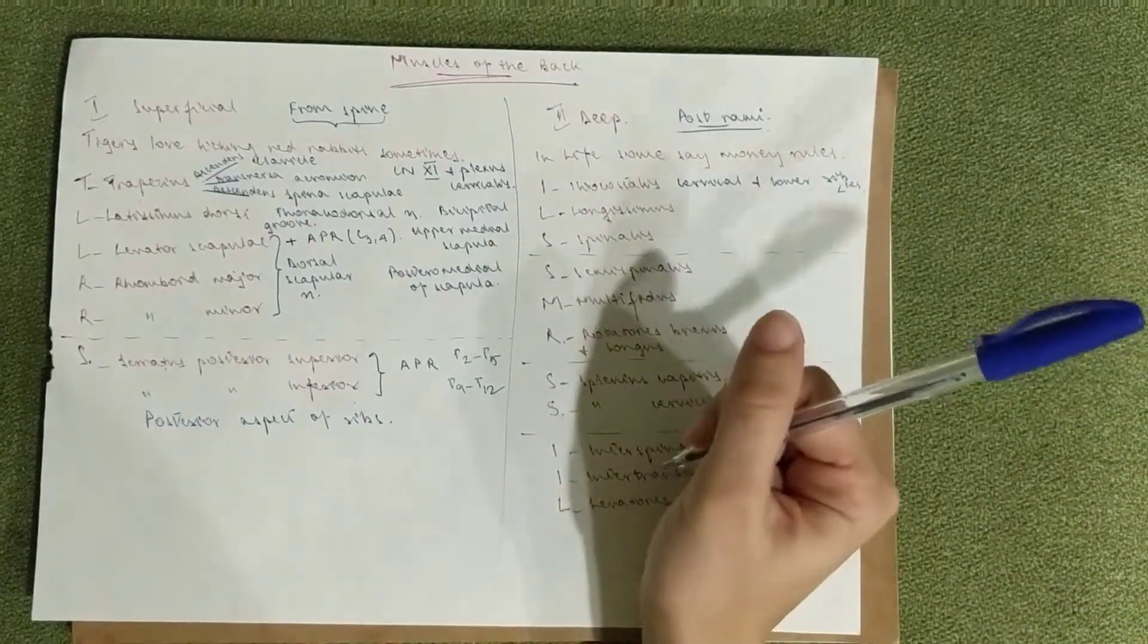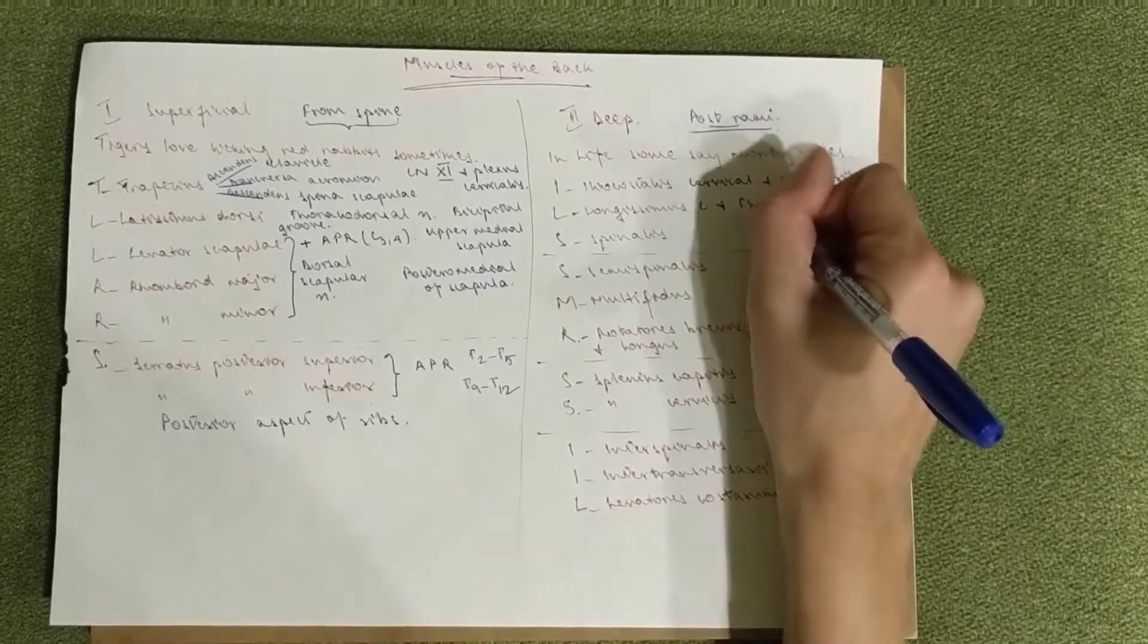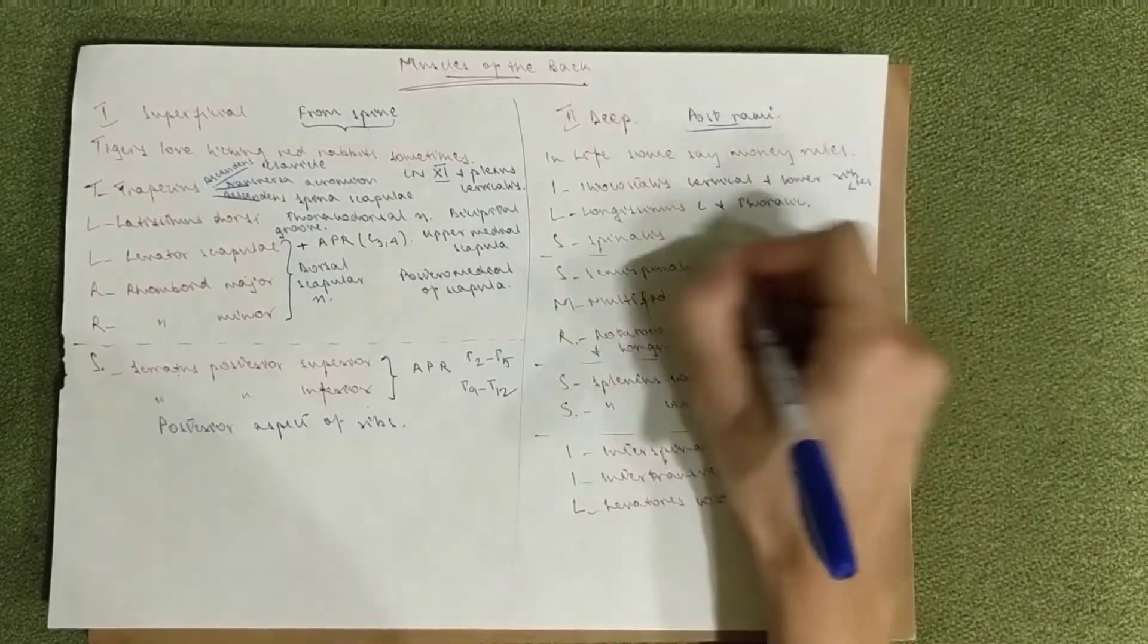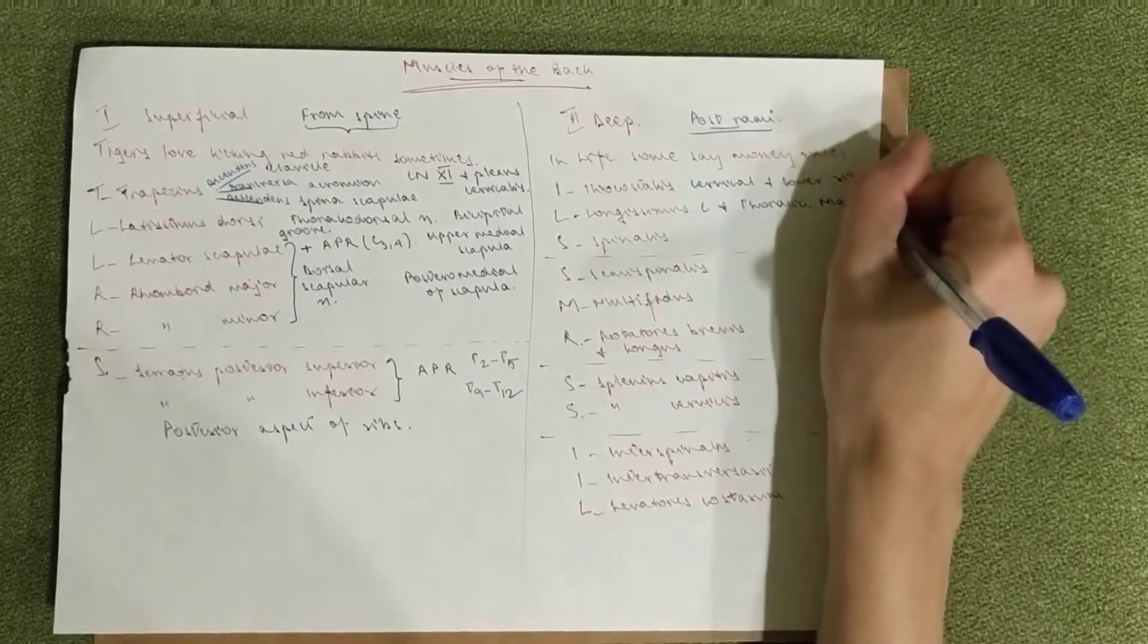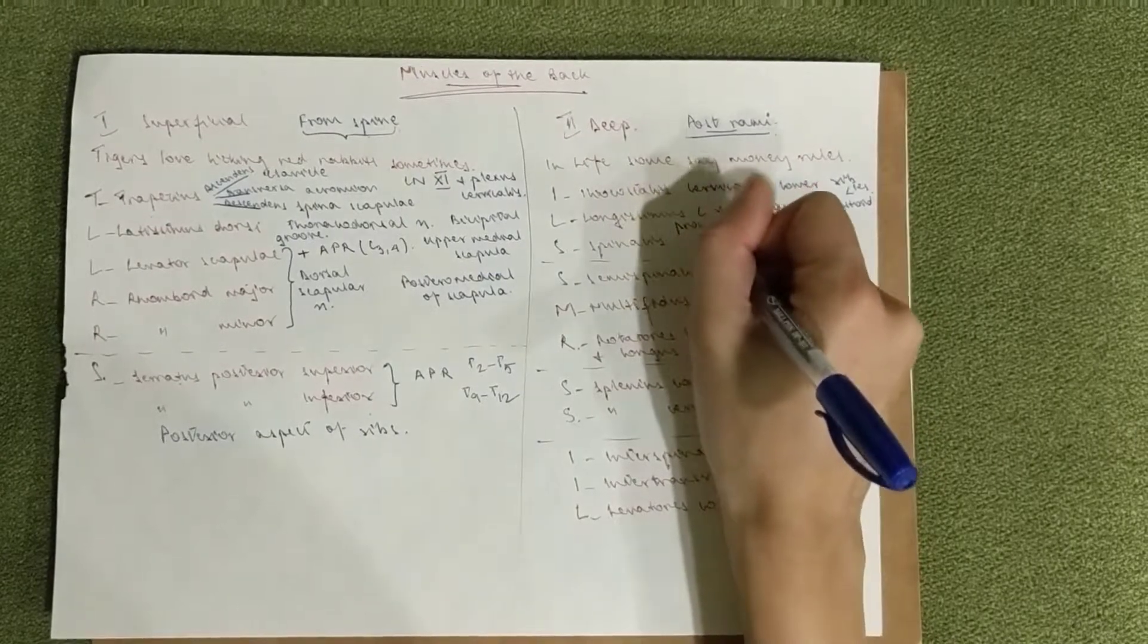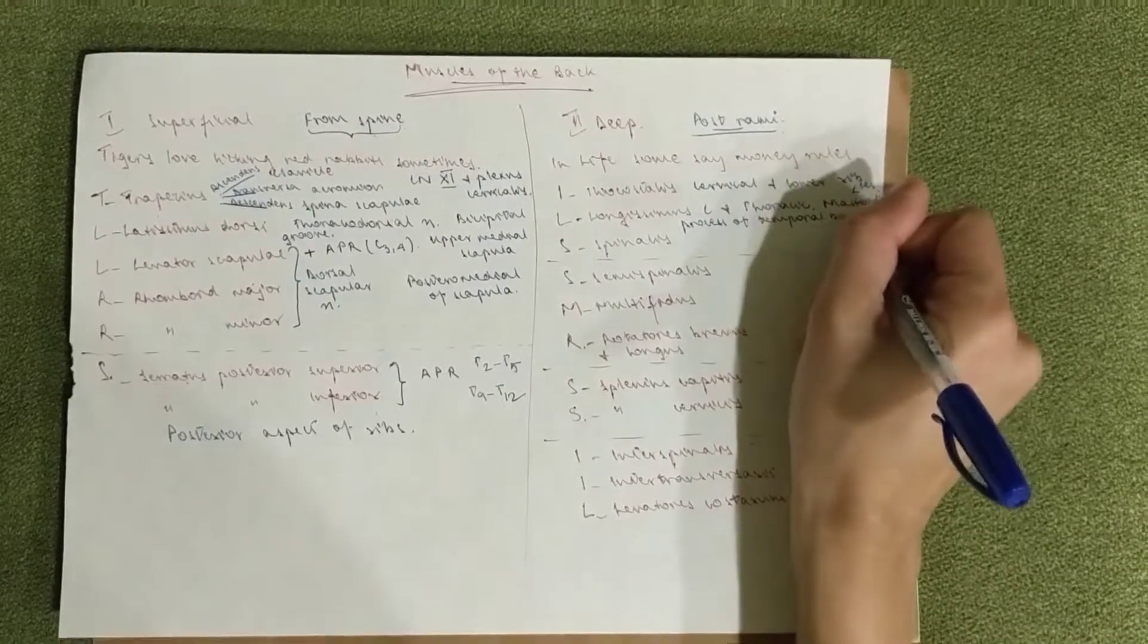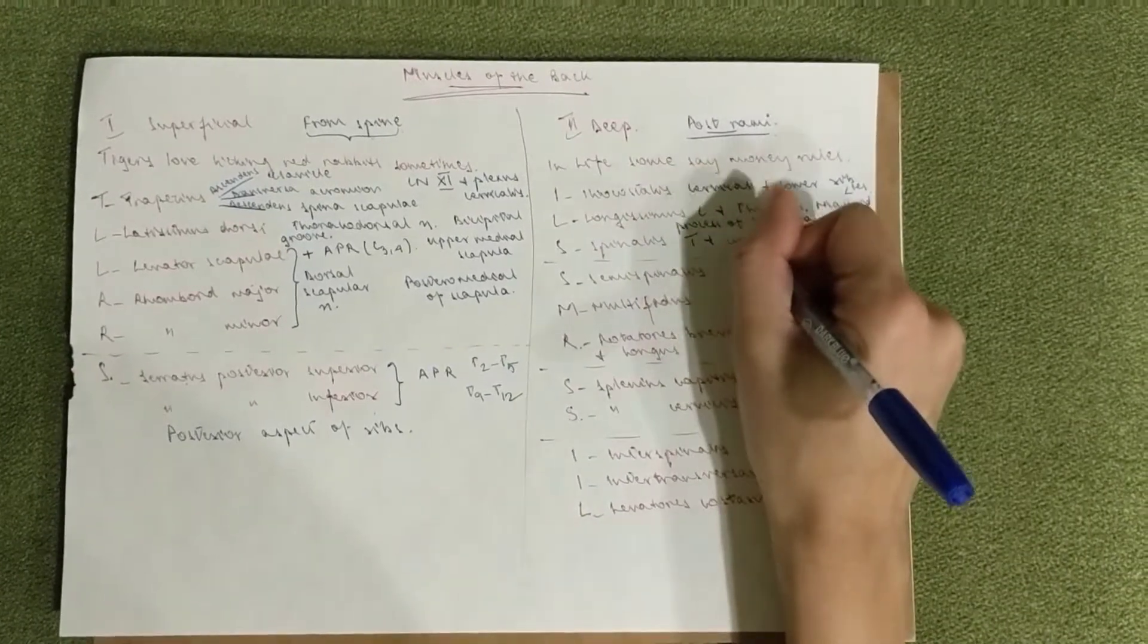The longissimus goes to the cervical and thoracic with the ribs. It also goes to the transverse processes and to the mastoid process, so it goes all the way up to the mastoid process of the temporal bone. The spinalis goes to the thoracic and the cranium.